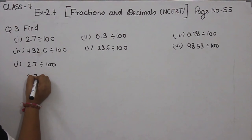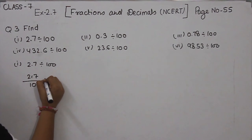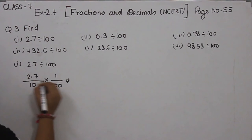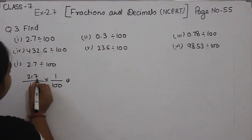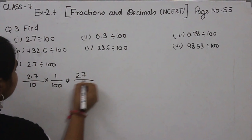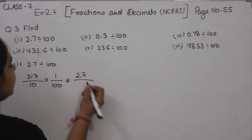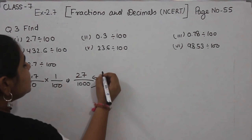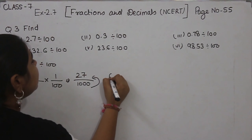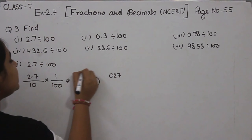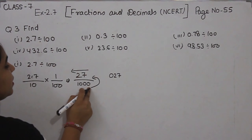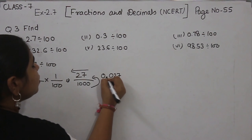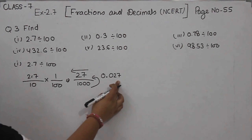First, we are going to remove the decimal. Now, multiply 1 by 100. 27 multiplied by 1 is 27. 10 multiplied by 100 is 1000. Now, we are going to convert these zeros to the decimal, so we are going to put the decimal after 3 digits from right to left. So the value is 0.027.